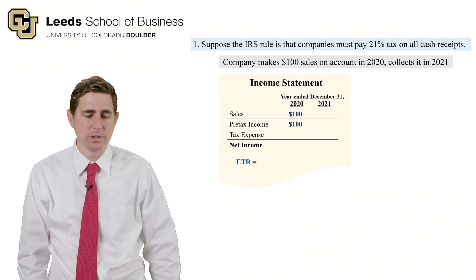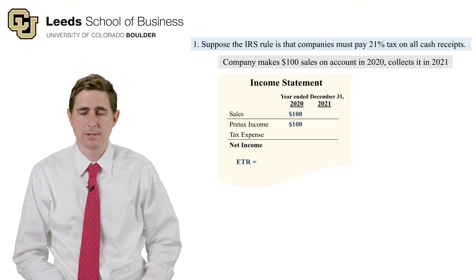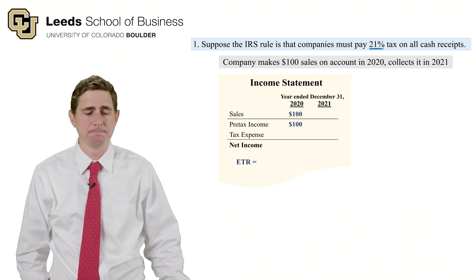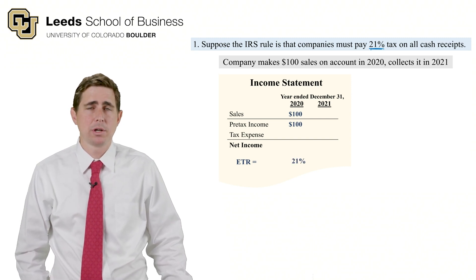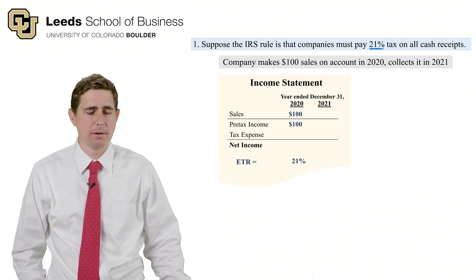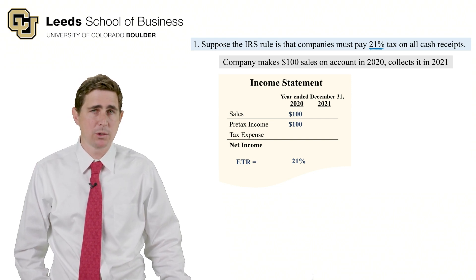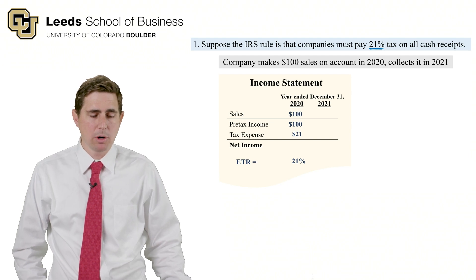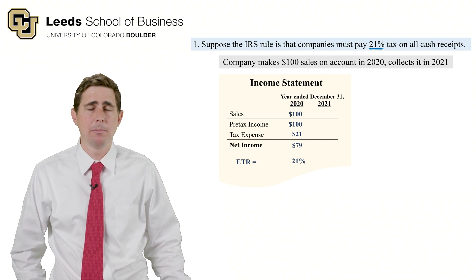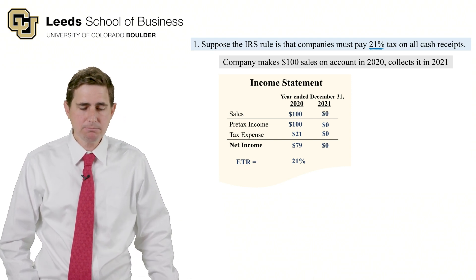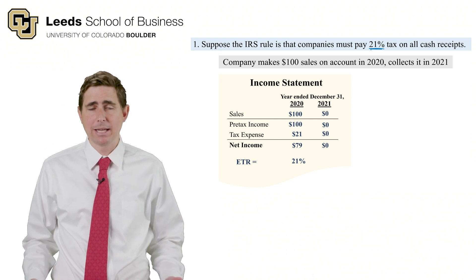What we actually do: we want investors to be able to recover the cost of taxes to our business. We pay a 21% tax rate on all income, so we want investors to recover that 21% ETR. When they take tax expense divided by pre-tax income, we want a 21% ETR — so we need to record $21 of tax expense and net income of $79 on our income statement.